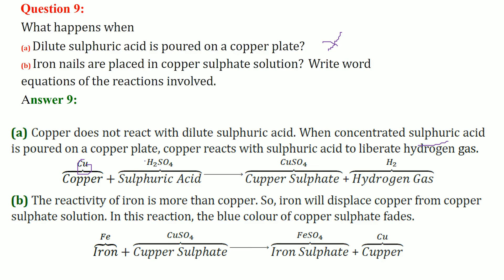Copper Cu will react with sulfuric acid H2SO4 and liberate hydrogen gas because Cu forms combination with SO4. This will be CuSO4, H2 will be liberated. Iron nails are placed in copper sulfate solution - write the word equation.